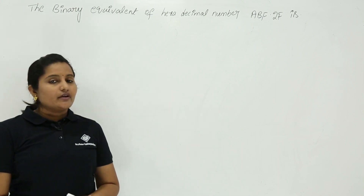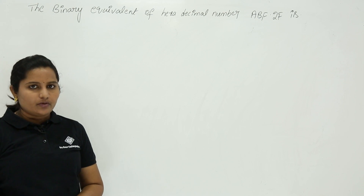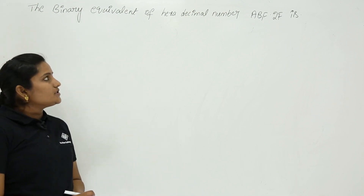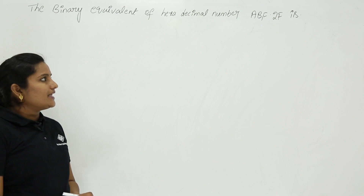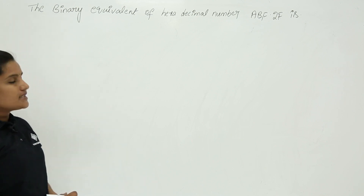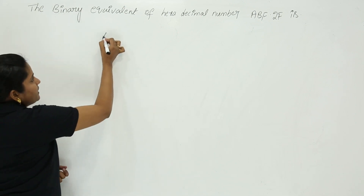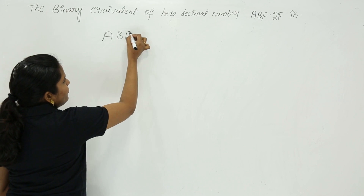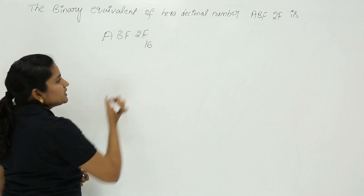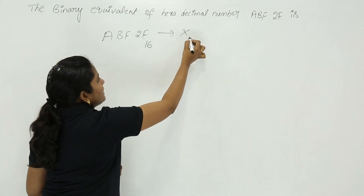In this class we are going to discuss another conversion related problem. The problem is: find the binary equivalent of hexadecimal number ABF.2F. This is related to hexadecimal to binary conversion. The given number ABF.2F has base 16, and we need to convert it into equivalent binary.